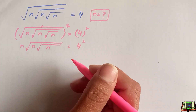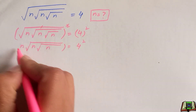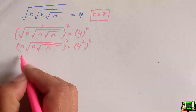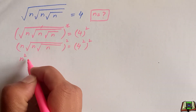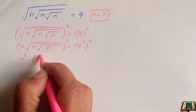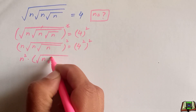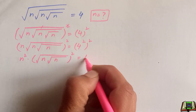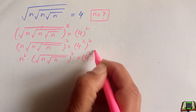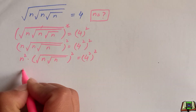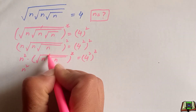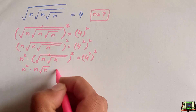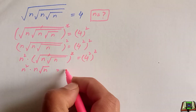Once again we will take the square of this equation on both sides. We can write it as n squared times the part — n times square root of n — whole squared, is equal to 4 squared, whole squared. Then n squared: the square and root cancel out, times n times square root of n, is equal to 4 raised to the power 4.